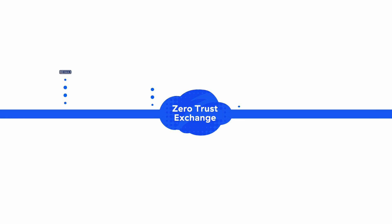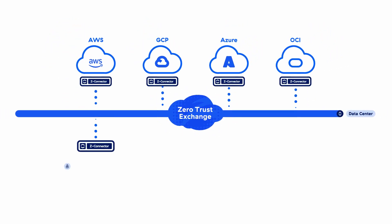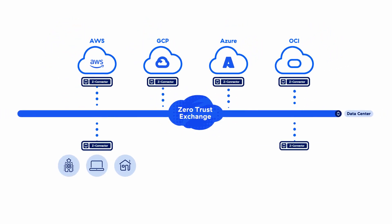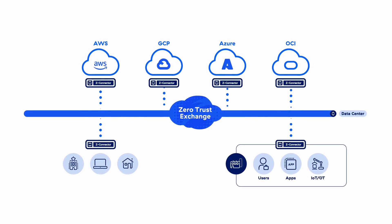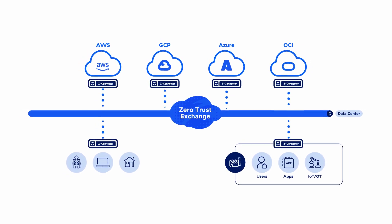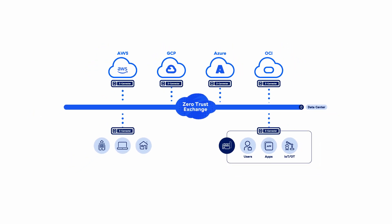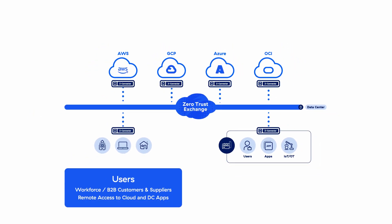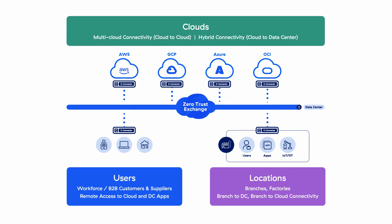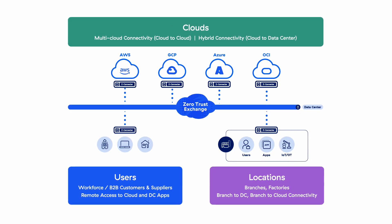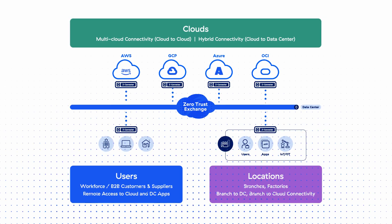Zero Trust SD-WAN securely connects your sites and data centers using the Zero Trust Exchange without the complexity of VPNs or overlay routing. By combining the power of Zscaler's industry-leading AI-powered SSE platform with seamless connectivity for users, locations, and cloud workloads, infrastructure teams can implement a single-vendor SASE strategy and reduce cost and complexity.